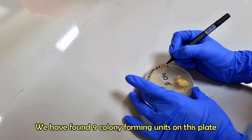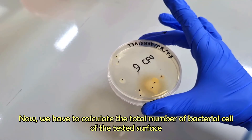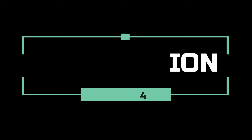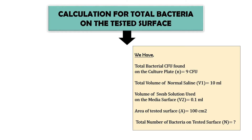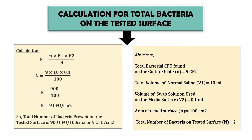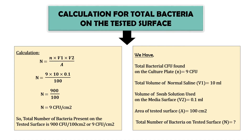We have found 9 colony forming units on this plate. Now we have to calculate the total number of bacterial cells on the tested surface. We found 9 CFU in the culture plate. Total volume of normal saline is 10 ml; we spread 0.1 ml swab solution on the surface of the culture plate. The area of the tested surface is 100 square centimeters. By solving the equation, we get the total number of bacteria of the tested surface is 900 CFU per 100 square centimeter area, or 9 CFU per square centimeter area.